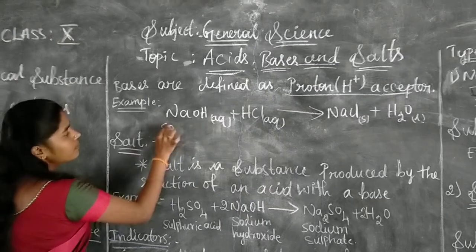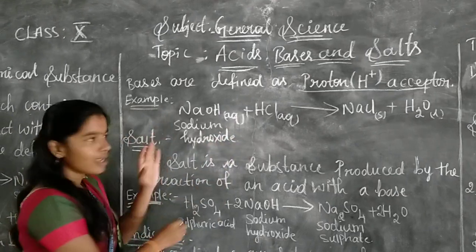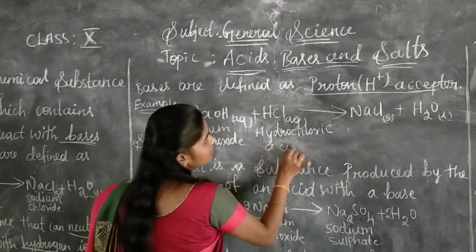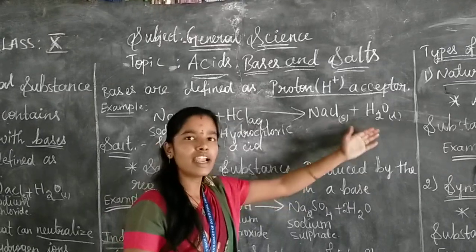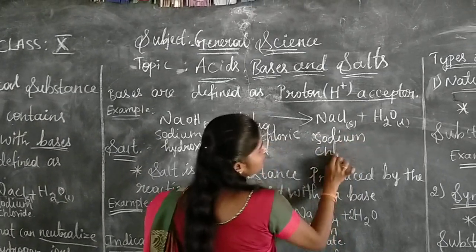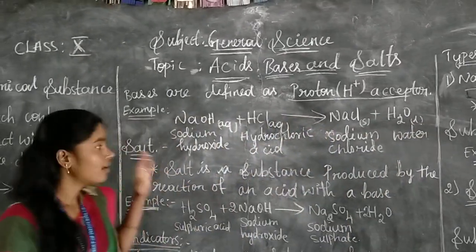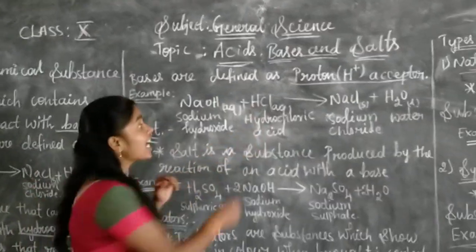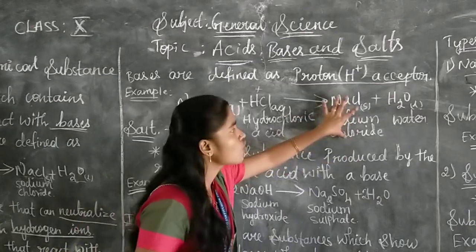For example, sodium hydroxide (NaOH) is a base, and HCl is hydrochloric acid. Bases react with acids and form salt and water — sodium chloride (NaCl) and water. To repeat: bases are substances that neutralize acids by reacting with hydrogen ions, and bases react with acids to form salt and water.